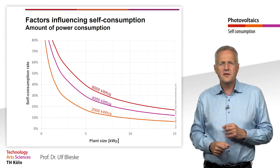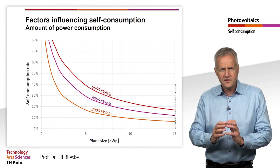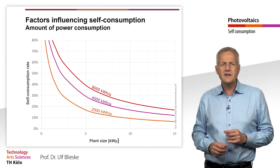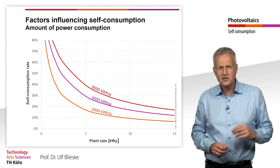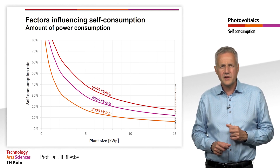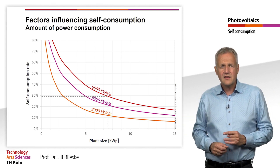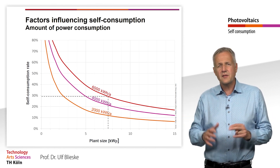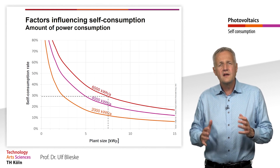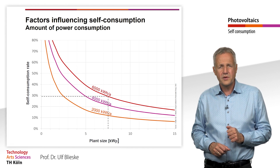High self-consumption rates can only be achieved with relatively small systems. In Germany, the average system size for new installations on residential buildings is currently 7.5 kW peak. With this plant size, even with a high annual electricity consumption of 6000 kWh per year, only a self-consumption rate of 29% would be possible.